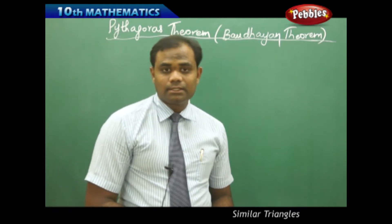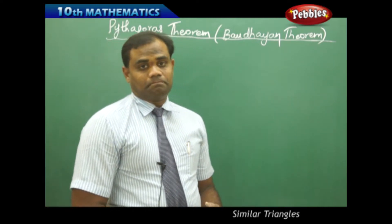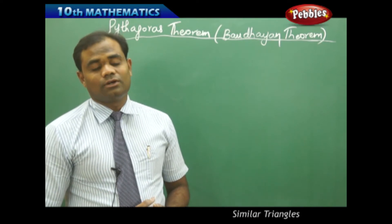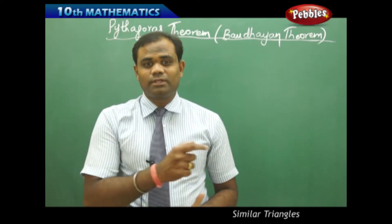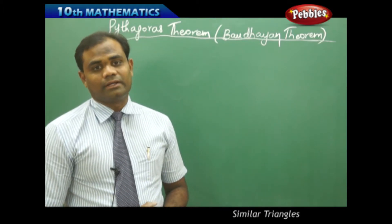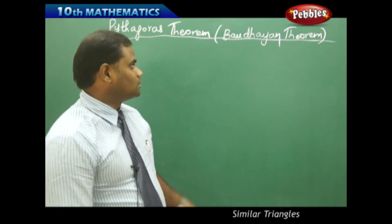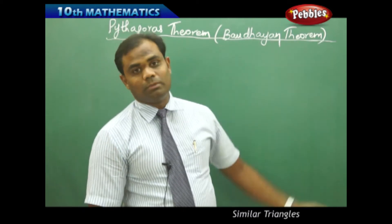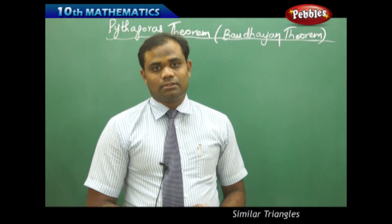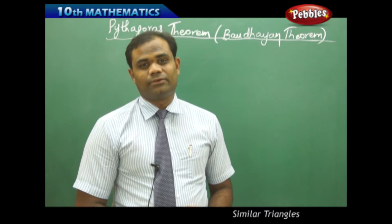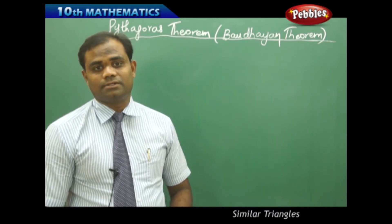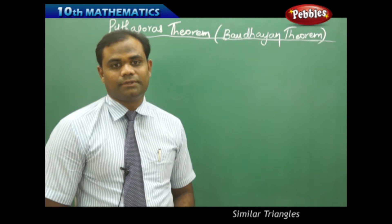Let's see one of the theorems connected with similarity of triangles. One method of proving the Pythagoras theorem is using similar triangles, which is quite easy. The Pythagoras theorem, which is also called the Baudayan theorem, is to be proved using similar triangles. The similarity concept of triangles is used in the Pythagoras theorem.